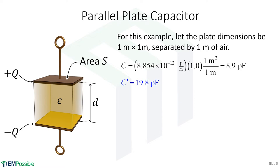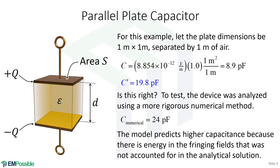Jumping to the conclusion: applying the numerical method, we get 24 picofarads. So Kirchhoff's approximation came pretty close, even though the separation is relatively large. The numerical solution predicts a higher capacitance than either analytical equation, because there's still energy stored outside the plates that contributes to capacitance. If we ignore it, we underestimate the capacitance.